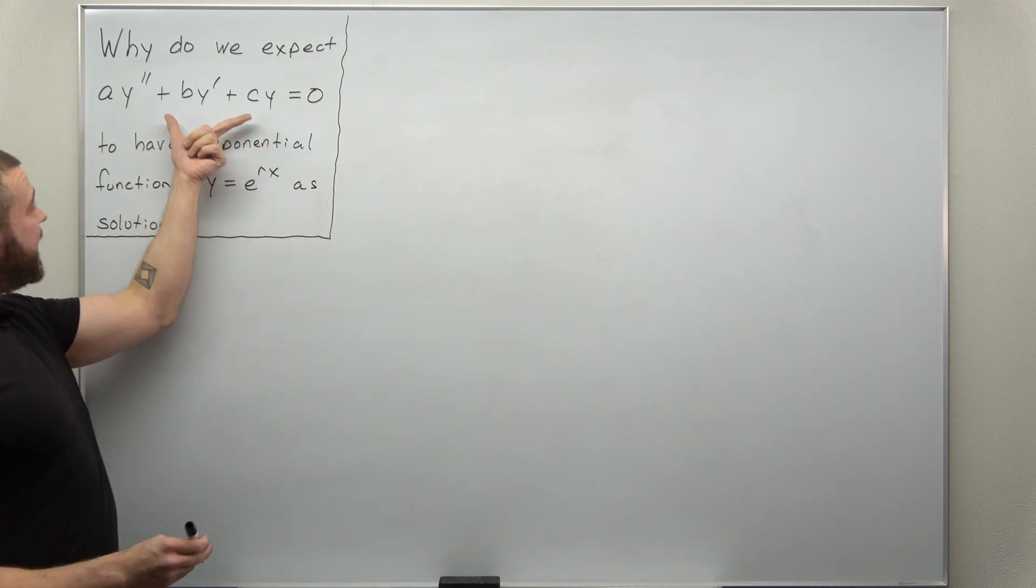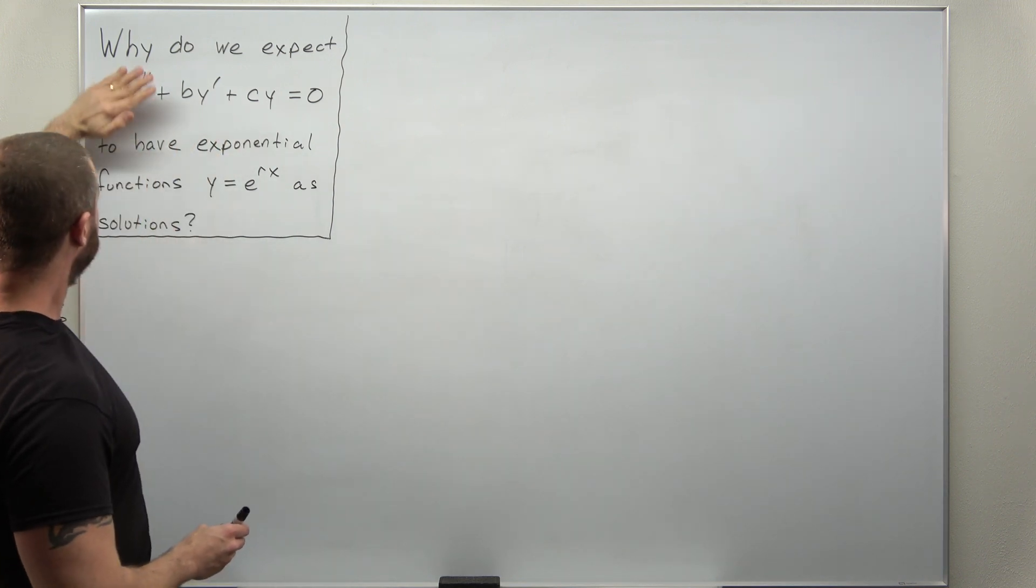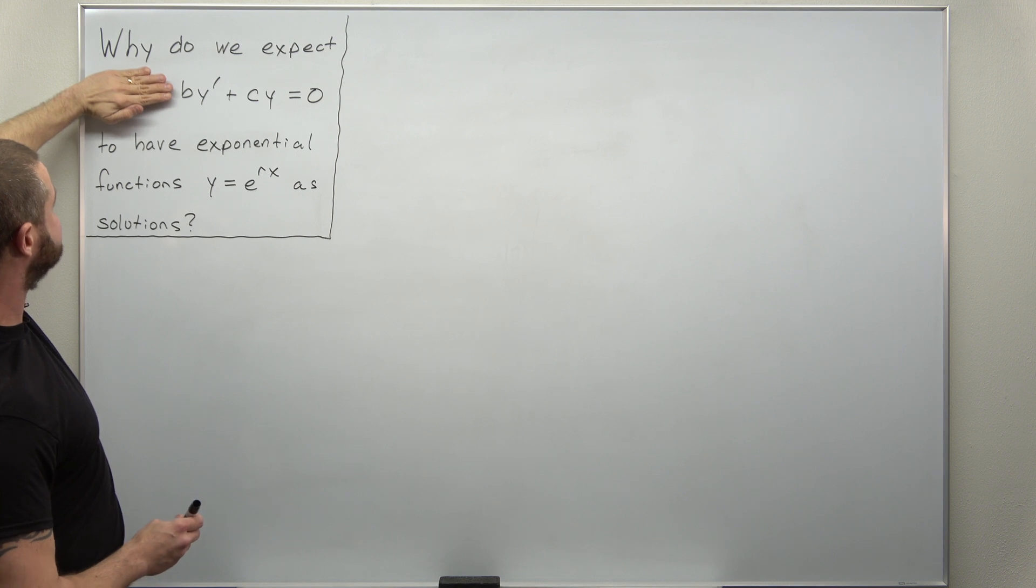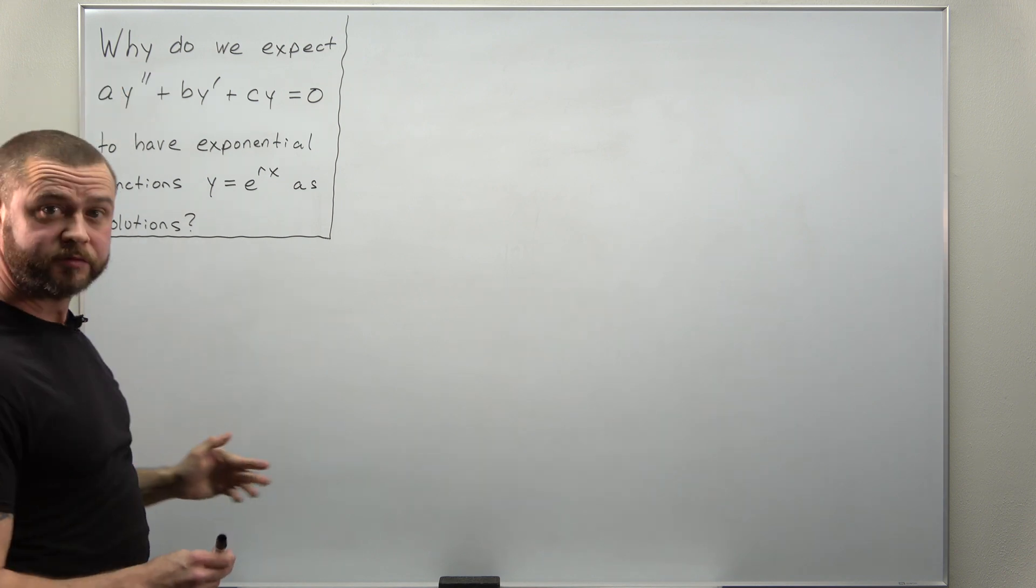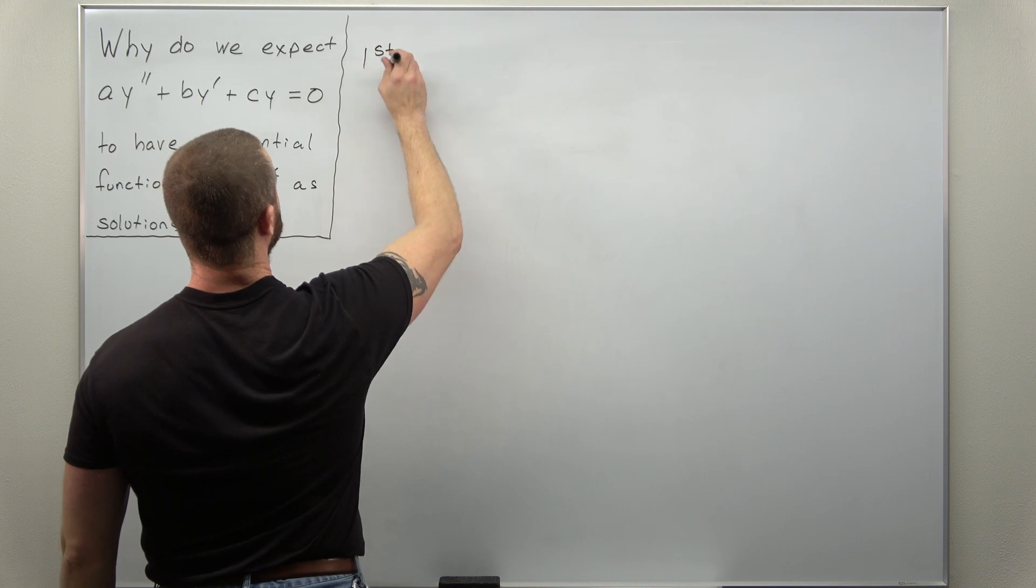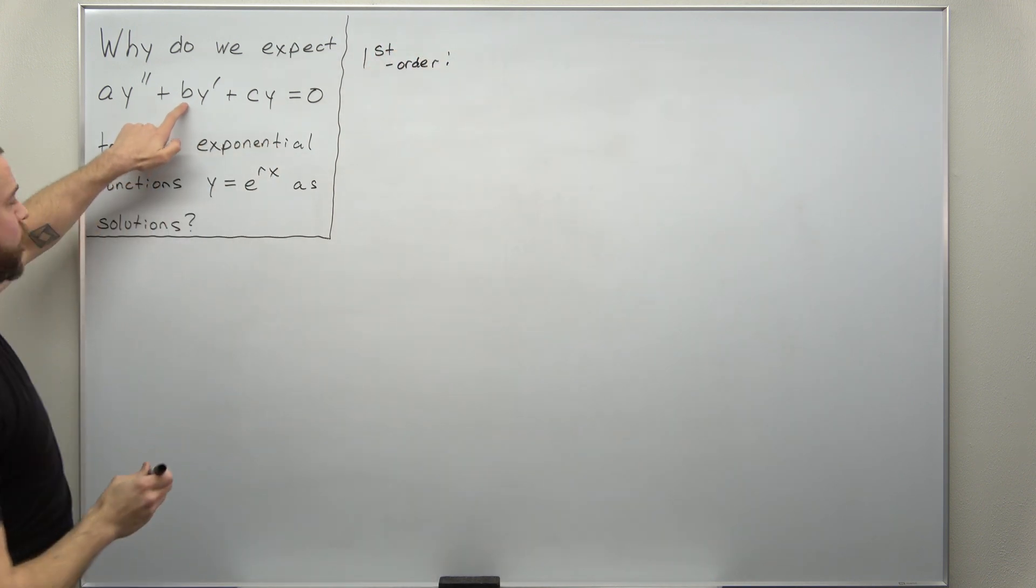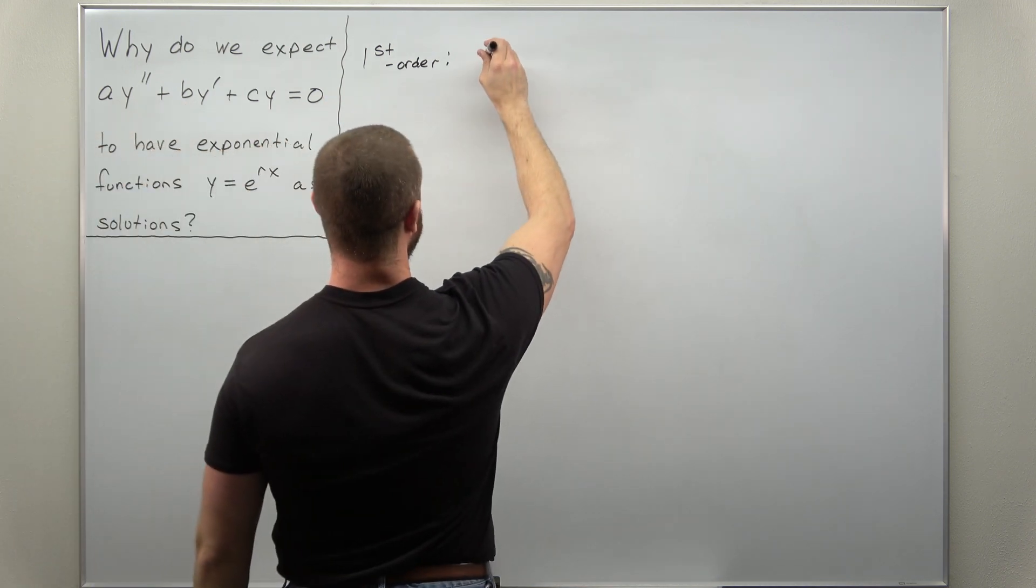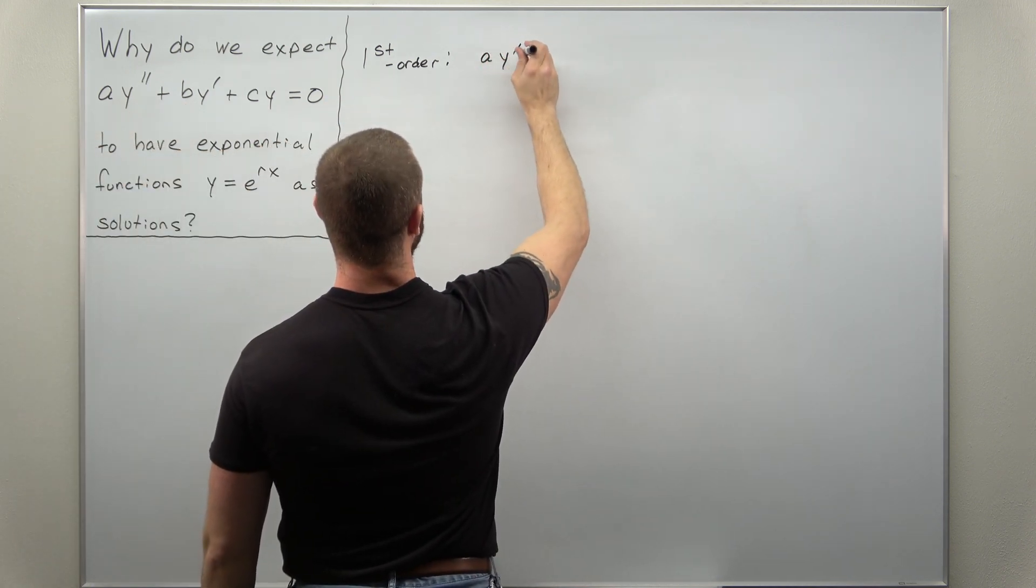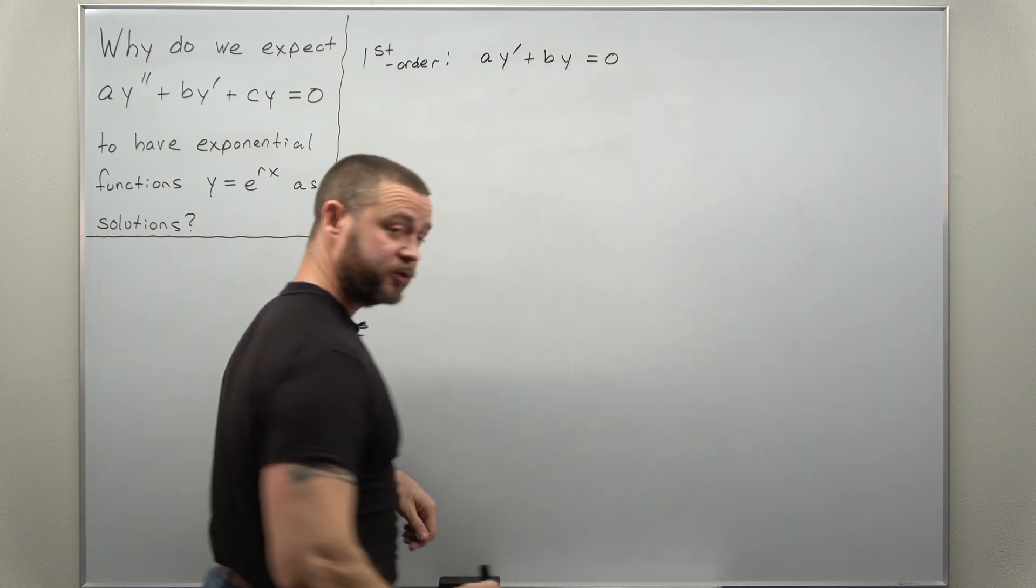So let's take a look at a similar first order differential equation and I'm basically just going to chop off the second derivative term. So let's write it down, our first order ODE. We'll call the first coefficient a. So we'll write this as a y prime plus by equals 0.